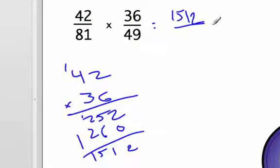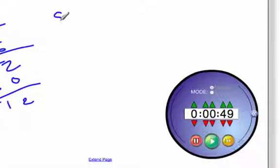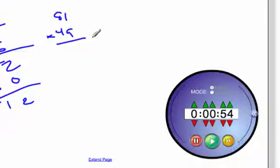And then I have 81 times 49. I'm going to have to do the math for that too. 81 times 49. 1 times 9 is 9, 8 times 9 is 72. 0, 4.